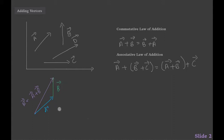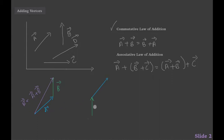Now let's check the commutative law of addition. If vector A plus vector B equals the resultant, does vector B plus vector A give us the same resultant — the same magnitude going in the same direction? Let's draw out vector B first, and then connect vector A to the head of vector B with the same magnitude and direction.